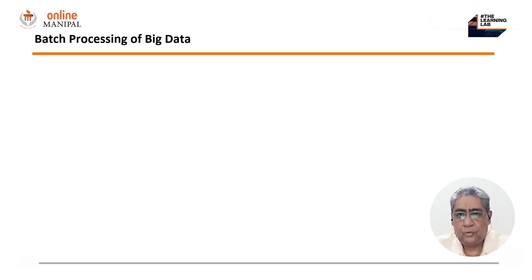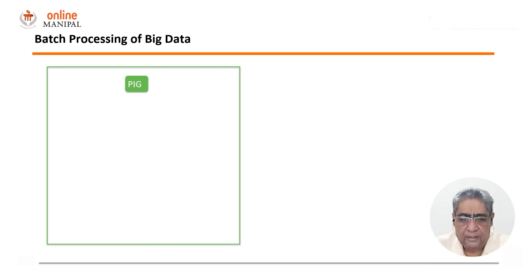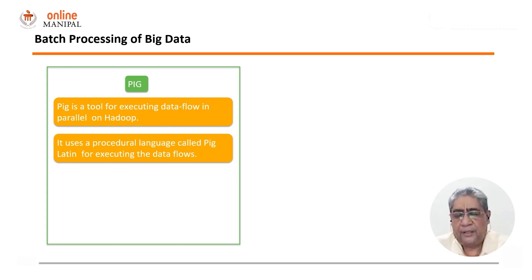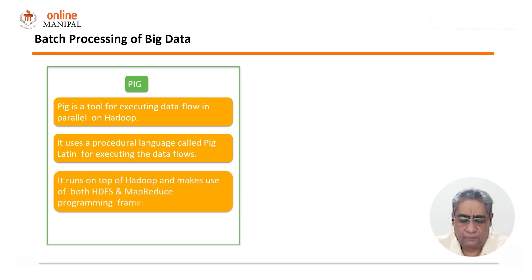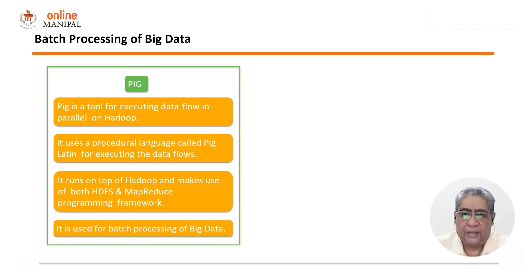The next step would be to process the data. We usually do two kinds of processing: batch processing and real-time processing. For batch processing of big data, one of the tools used very frequently is PIG. It is a tool for executing big data flow in parallel on Hadoop. The data analysis and transformation in PIG is done using a language called PIG Latin. PIG runs on top of Hadoop and uses both HDFS and MapReduce programming framework for data transformation, analysis, and storage. It is one of the tools for processing big data in batch mode.